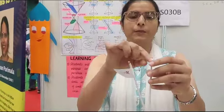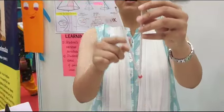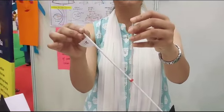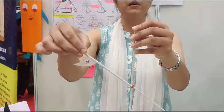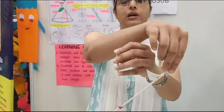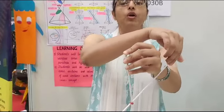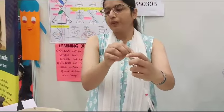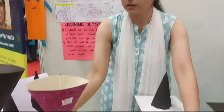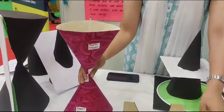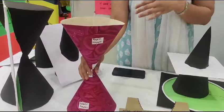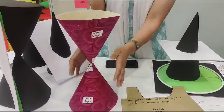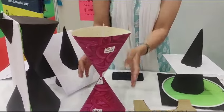Look at the conic section. This is the principal axis, this is the generator line. If I rotate it around, then I get a surface. There will be a double-nappe right circular cone — this is the lower nappe and this is the upper nappe.